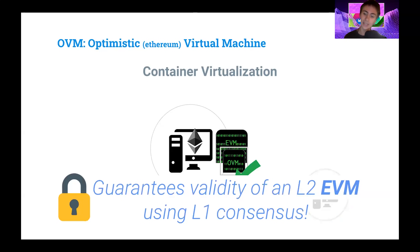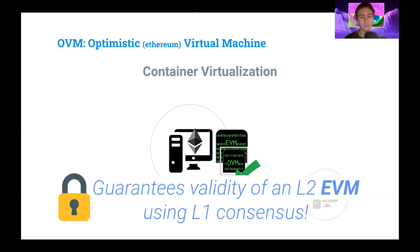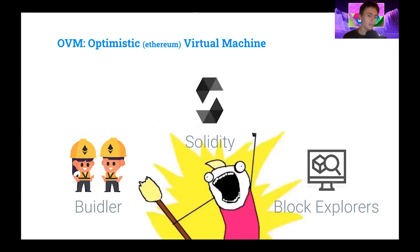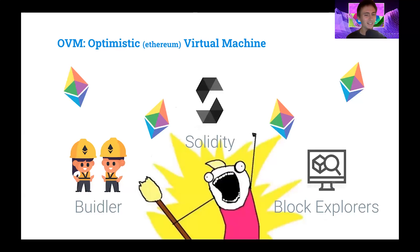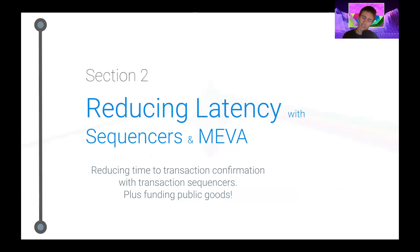This gives us the ability to guarantee the validity of an L2 EVM and use L1 consensus, so we get the same development experience across all these systems — all the developer tools. That concludes throughput and the EVM section.